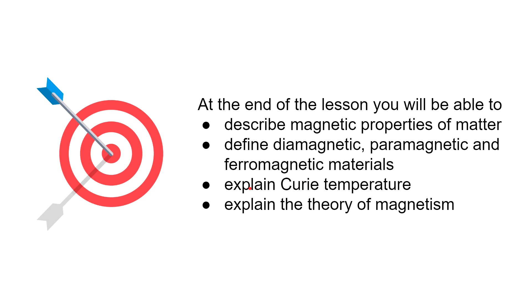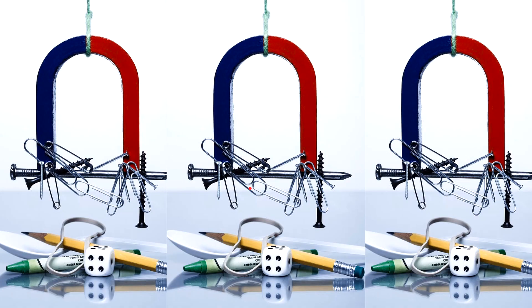It's a familiar observation that certain solids such as iron and steel are strongly attracted to magnets. However, an important principle that is commonly overlooked is the fact that all matter exhibits magnetic properties. Even substances like copper and aluminium that are not normally thought of as having magnetic properties are affected by the presence of a magnet.